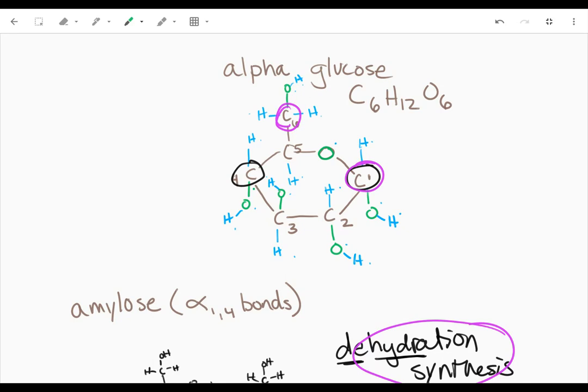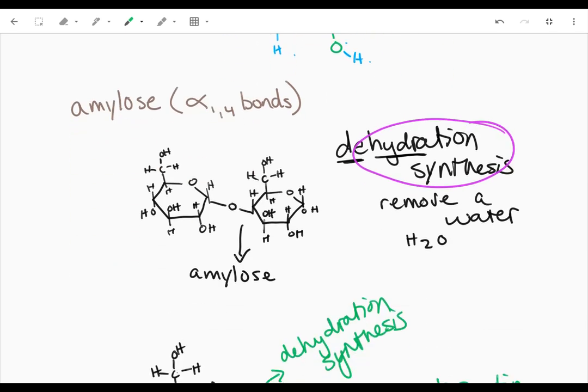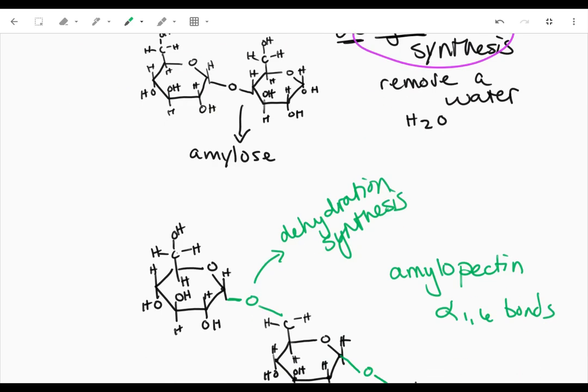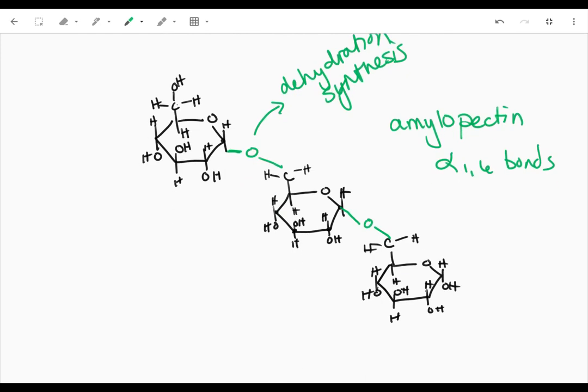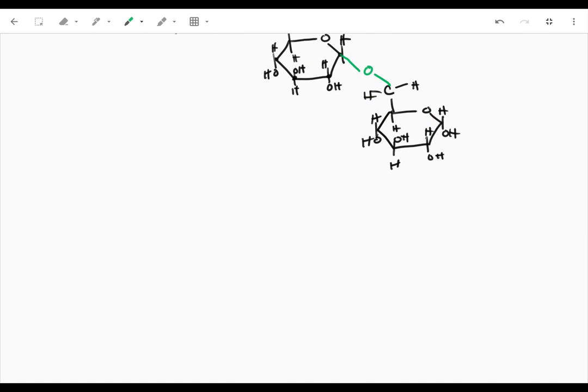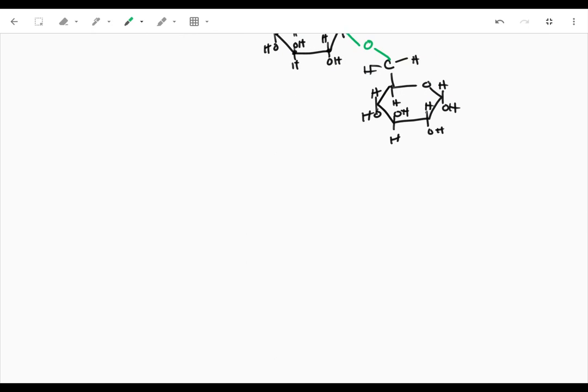So we're going to have alpha 1-4 bonds and alpha 1-6 bonds. So we saw in a previous video amylose being built through alpha 1-4 bonds and then amylopectin being built through alpha 1-6 bonds. Now we're just going to put everything together.